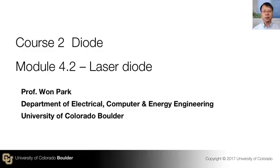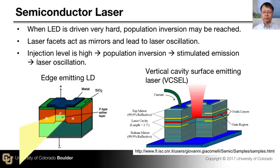In this video we will discuss laser diodes. A laser diode is essentially the same as a light emitting diode in that you have a PN junction, apply a forward bias, drive a current, and the injected electrons and holes recombine near the junction and produce light.